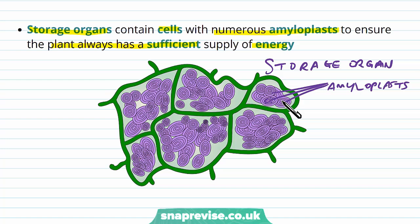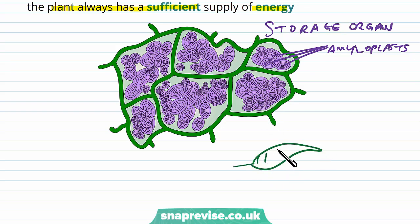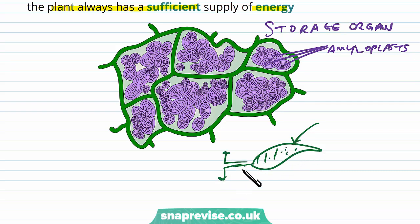Starch is used by cells which have a high energy demand. Seeds use this for growing, and at the leaf the photosynthesis process is making starch, which is then stored until it's needed around various parts of the plant.